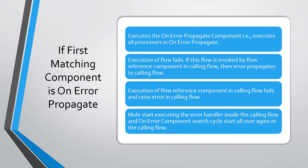If the first matching component is an On Error Propagate component, then Mule executes all the processors defined inside that On Error Propagate component, and execution of the flow fails. If this flow is invoked by a Flow Reference component in a calling flow, then the error propagates to the calling flow. The Flow Reference component in the calling flow fails and raises an error, causing Mule to start executing the error handler inside the calling flow, where the On Error component search cycle starts all over again.